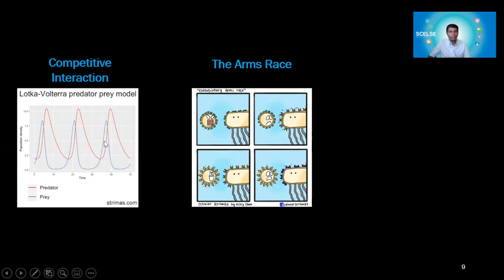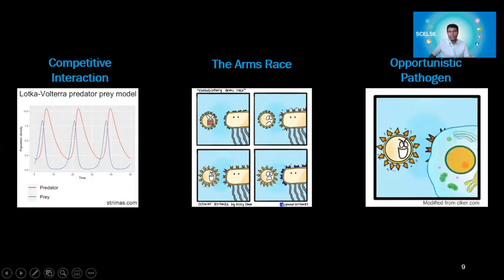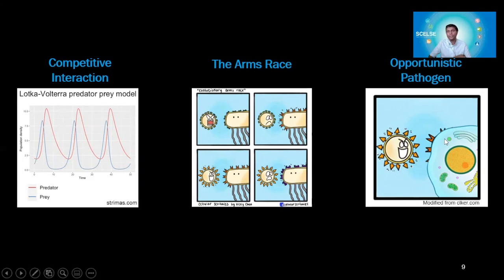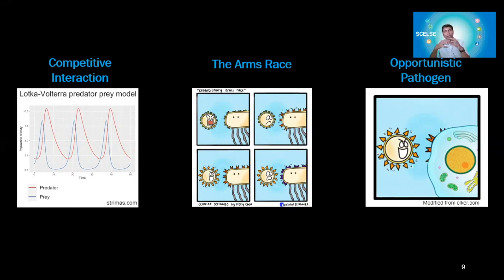Zoonotic infections are caused by these kinds of events. There is an interaction going on between an animal and its own virus or bacteria, and because of the arms race going on for a long time, sometimes a mutation or new trait develops that can affect humans. This is how it works. For this reason, it is really important that we monitor these organisms.